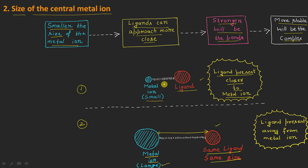In case one, where the metal ion has a small size, the ligand is present closer to the metal ion. In case two, the same ligand is present but the metal ion has a large size, so the ligand is farther from the central metal ion. When the size is small, the ligand is closer, resulting in stronger bonds and a more stable complex; with a large metal ion, the bonds are relatively weaker and the complex less stable.